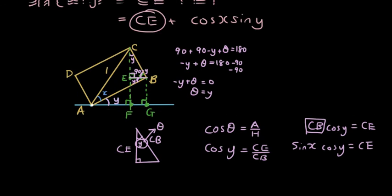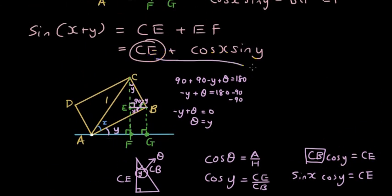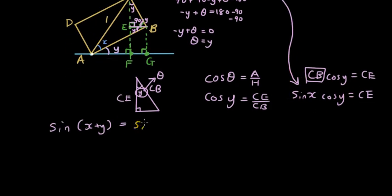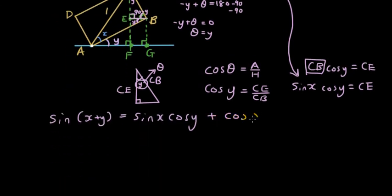Substituting back into our equation: sin(x + y) = CE + EF = sin x · cos y + cos x · sin y. That concludes our proof. Thanks for watching, guys — hopefully you learned something today.